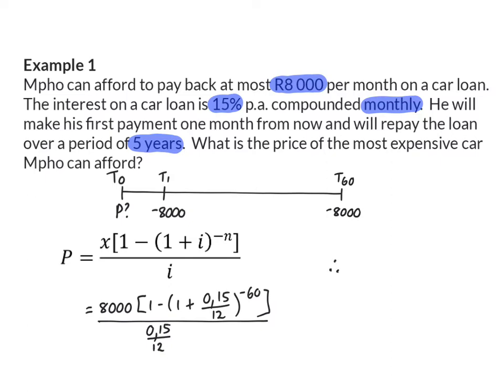So here we will see that the P-value or the present value is equal to R336,276.73. This means that the price of the most expensive car that Mpo can afford will be R336,276.73.